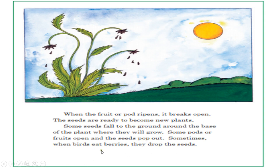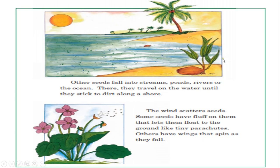Sometimes when birds eat berries, they drop the seeds. These are the ways seeds fall from the flower to the ground and grow another plant. Other seeds fall into streams, ponds, rivers, or the ocean. There they travel on the water until they stick to dirt along the shore. The shore is the land around sea or ocean. So some seeds travel and reach streams, ponds, rivers, or the ocean, keep traveling until they reach or stick to dirt along the shore, and then grow the plant.